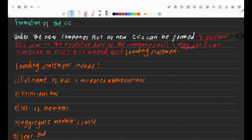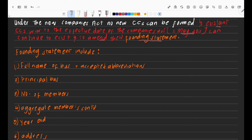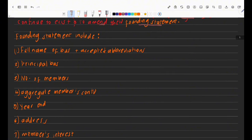Under the new Companies Act, no new CCs can be formed. CCs in existence prior to the effective date — the 11th of May 2011 — can continue to exist. Importantly, those that were in existence before can still amend their founding statement. Just because no new CCs can be formed doesn't mean an existing CC cannot amend its founding statement.